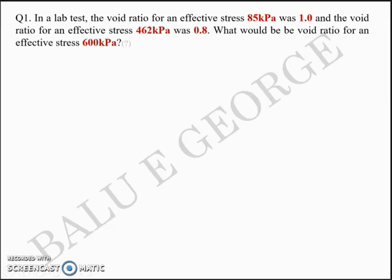Good morning. We'll try to solve a few numerical problems based on the consolidation of soil. Question number one: in a lab test, the void ratio for an effective stress of 85 kilopascal was 1.0, and the void ratio for an increased effective stress of 462 kilopascal is 0.8. What would be the void ratio for an effective stress of 600 kilopascal?